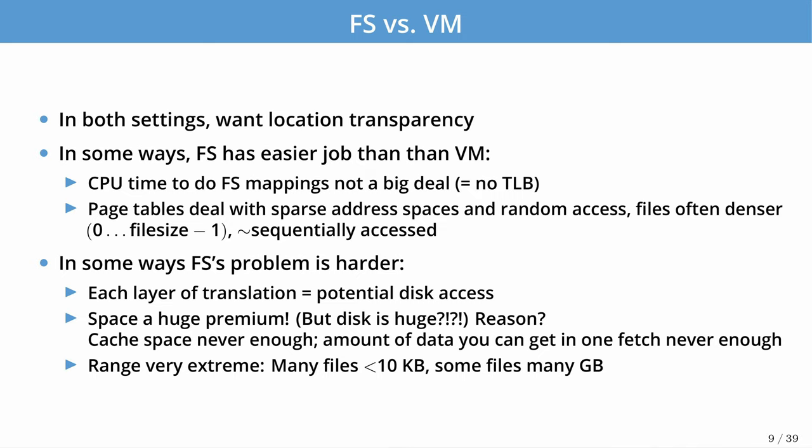But in some ways the file system's job is harder. Each layer of translation is a potential disk access, and each disk access is very slow — paying an average seek penalty of 8 milliseconds per operation is expensive. Space comes at a large premium, both for in-memory caching and on-disk size. And there's the diversity of workloads: files can range from a few kilobytes to many gigabytes in size.